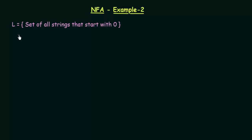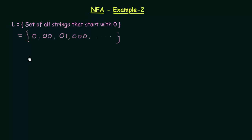Before starting, what will be the set of all strings that start with 0? The elements would be like 0, 00, 01, 000, and so on — it is an infinite set. Now let's see how we can design the NFA. As usual, we always start with the starting state. Let me call it state A.